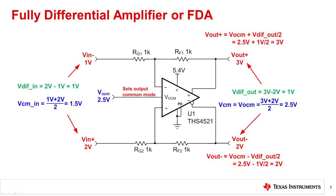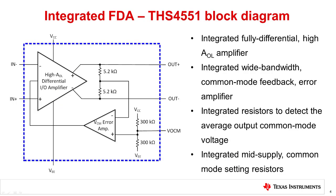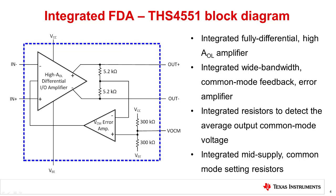Now let's look at an ADC circuit example. This slide shows some detail on the internal circuitry of a typical FDA, the THS4551. At the core of the device is an integrated differential high open loop gain forward path amplifier, as shown here. Also integral to the design is a secondary error amplifier that controls the FDA's output common mode voltage. The error amplifier is typically a wide bandwidth, low noise, single ended op amp that detects the common mode signal and generates an error signal that forces the output common mode voltage to be equal to VOCM.